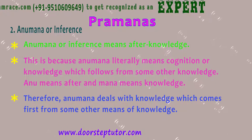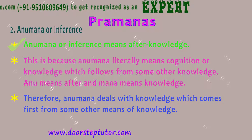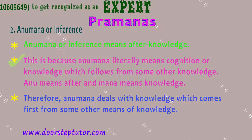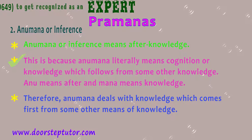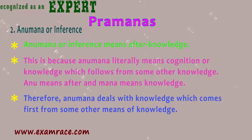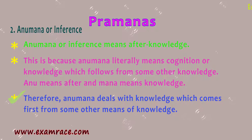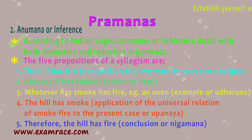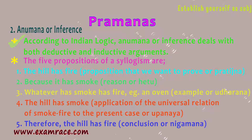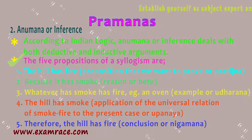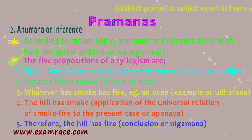Number 2: Anumana, or Inference. Anumana means 'after knowledge,' because it literally means cognition or knowledge which follows from some other knowledge. Anu means 'after' and mana means 'knowledge.' According to Indian logic, anumana deals with both deductive and inductive arguments. The five propositions of a syllogism are: Pratijna, Hetu, Udharana, Upanaya, and Nigamana.